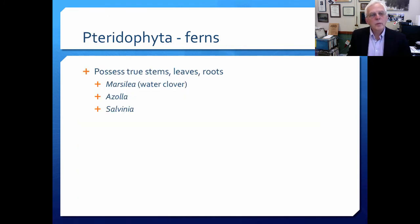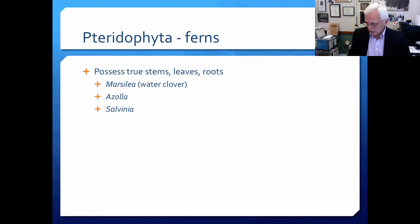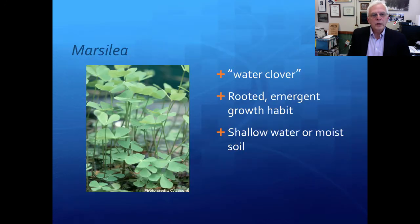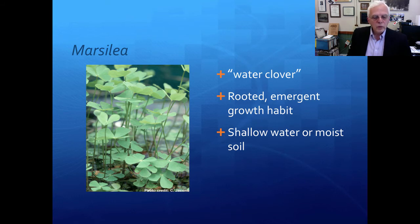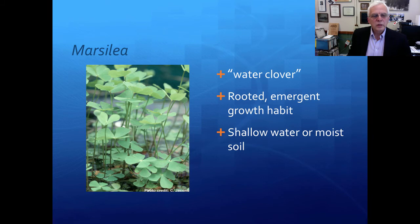The next group would be the Pteridophyta, or ferns. They possess true stems, leaves, and roots — fairly differentiated sorts of tissue. We'll talk about Marsilea, Azolla, and Salvinia as groups of the Pteridophytes. Here's Marsilea — it's called water clover. It's quite a pretty, delicate plant. It's usually a rooted emergent growth habit, although sometimes you'll find it right on shore, not emerging from the water. It lives in shallow water or moist soil. It's a very beautiful, delicate little plant, and it's actually a fern.